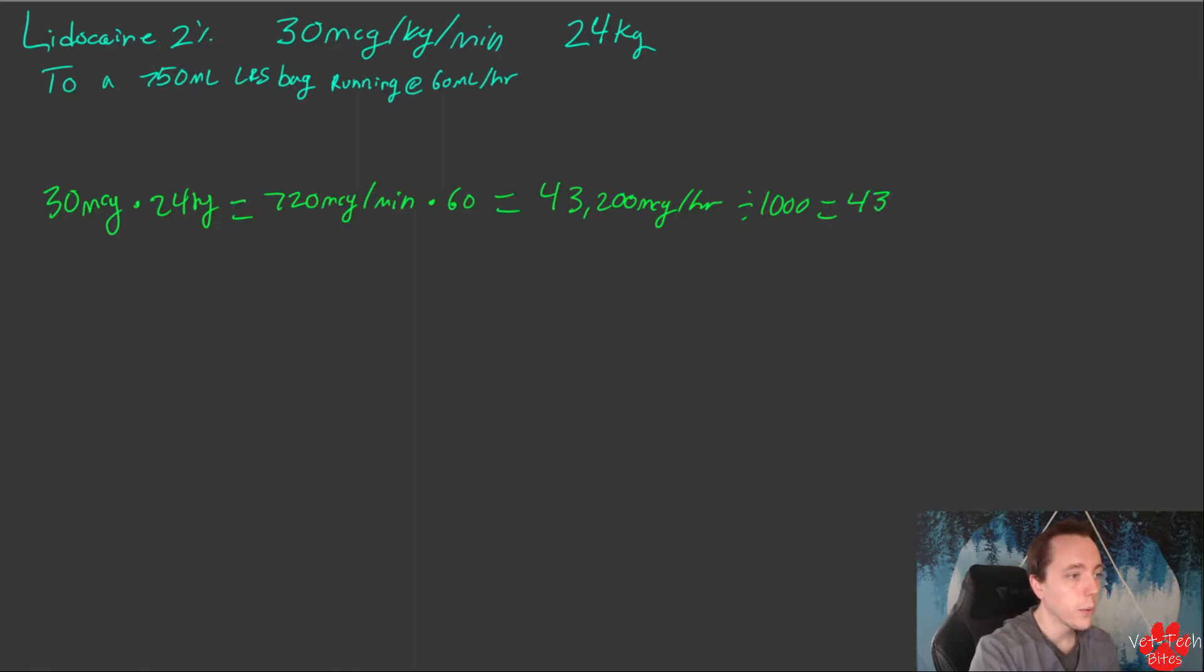Then we multiply that by 24 hours because we're trying to find the total amount of fluids and drug the patient is getting per day, just like the last one. So 43.2 mg per hour times 24 hours equals 1,036.8 mg per day. Next, we find how much fluid the patient gets per day or 24 hours. We know it's running at 60 ml per hour times 24 hours. That's 1,440 ml per day or 24 hours.